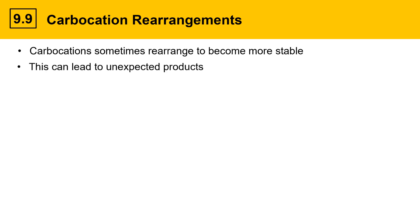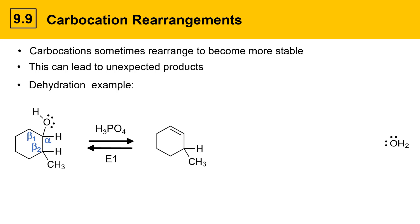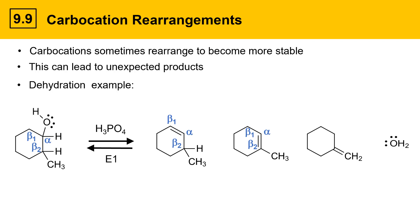As an example, let's take a look at this dehydration reaction. 2-methylcyclohexanol reacts with phosphoric acid in an E1 reaction, and alpha and beta positions are shown here. Water is one product of that reaction, along with a product where there's a double bond between the alpha and beta 1 positions, a product where there's a double bond between the alpha and beta 2 positions, but then there's a strange product that turns up that has the double bond in an unexpected spot.